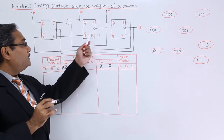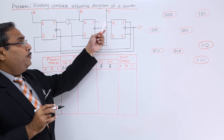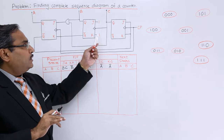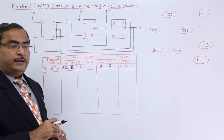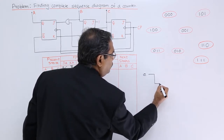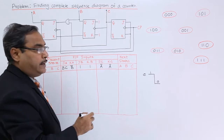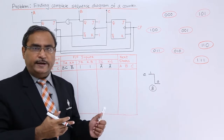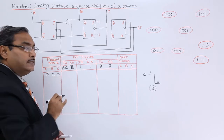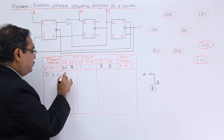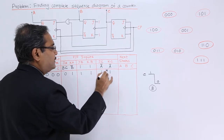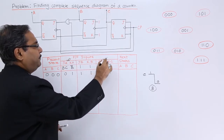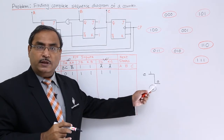The flip-flop is negative edge triggered. That means when the C output has a transition from 1 to 0, and the inputs are 1,1, the flip-flop output will get complemented. So when C has a transition from 1 to 0, the output of flip-flop B will get complemented. Flip-flop A and flip-flop C are getting clock pulse from the main source, while flip-flop B is getting clock pulse from C.